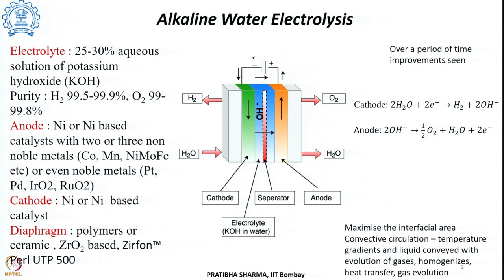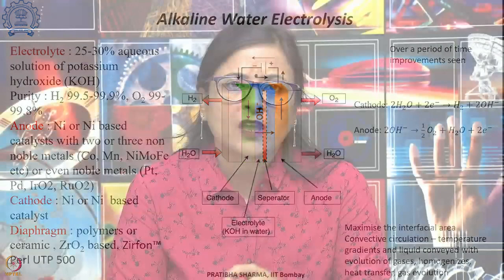Alkaline water electrolysis involves lower cost material components compared to PEM electrolysis. It was used as early as the 1920s for producing hydrogen in various chemical and fertilizer industries. There were several plants of capacity as high as 165 megawatt at that time, located close to hydroelectric power plants to supply the required electrical energy.